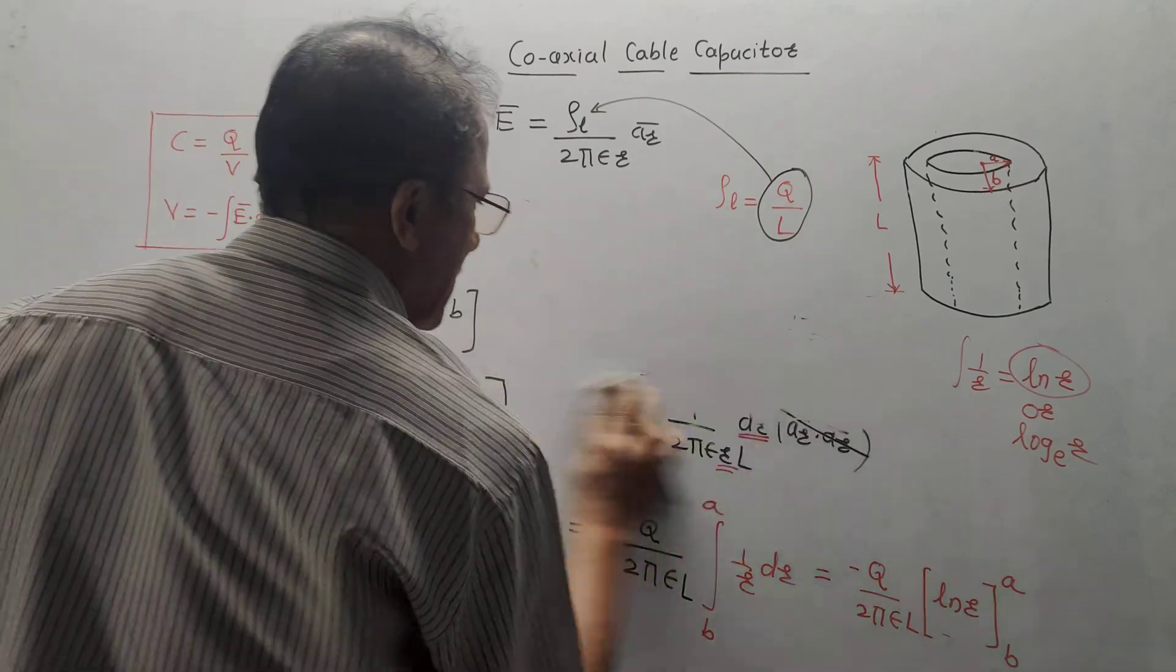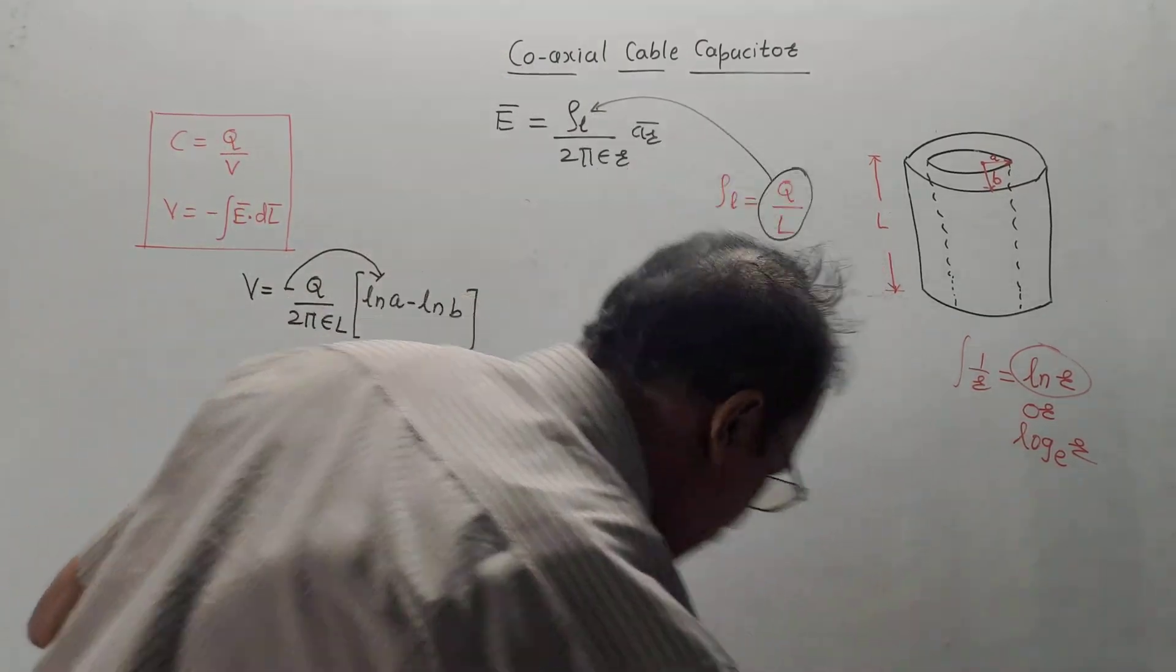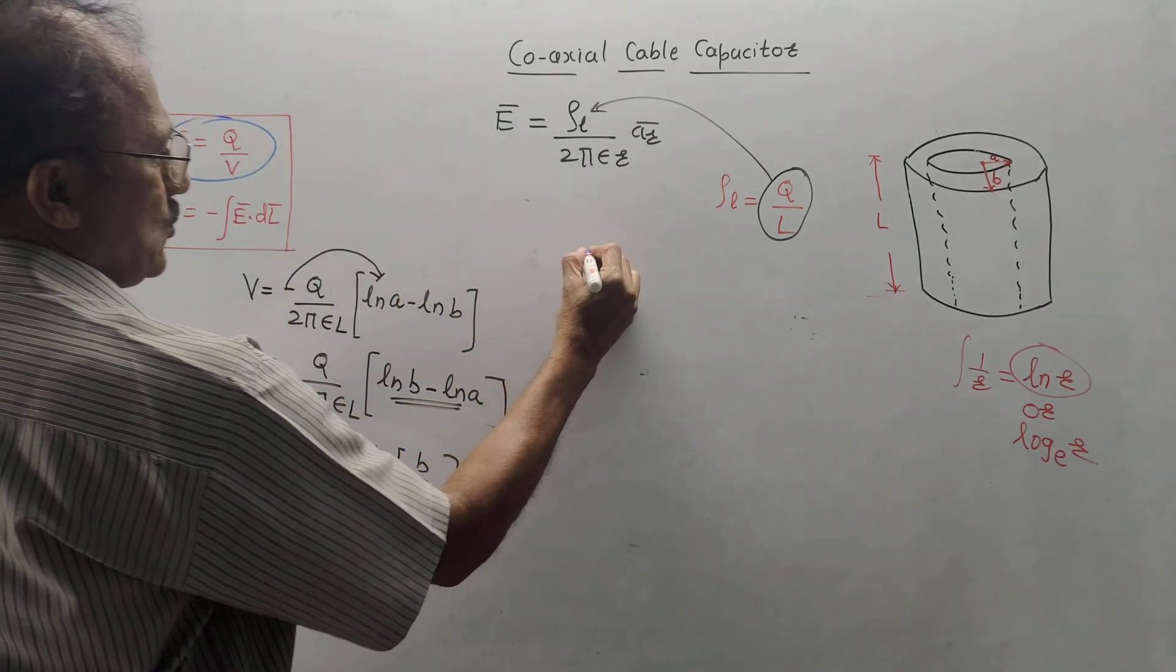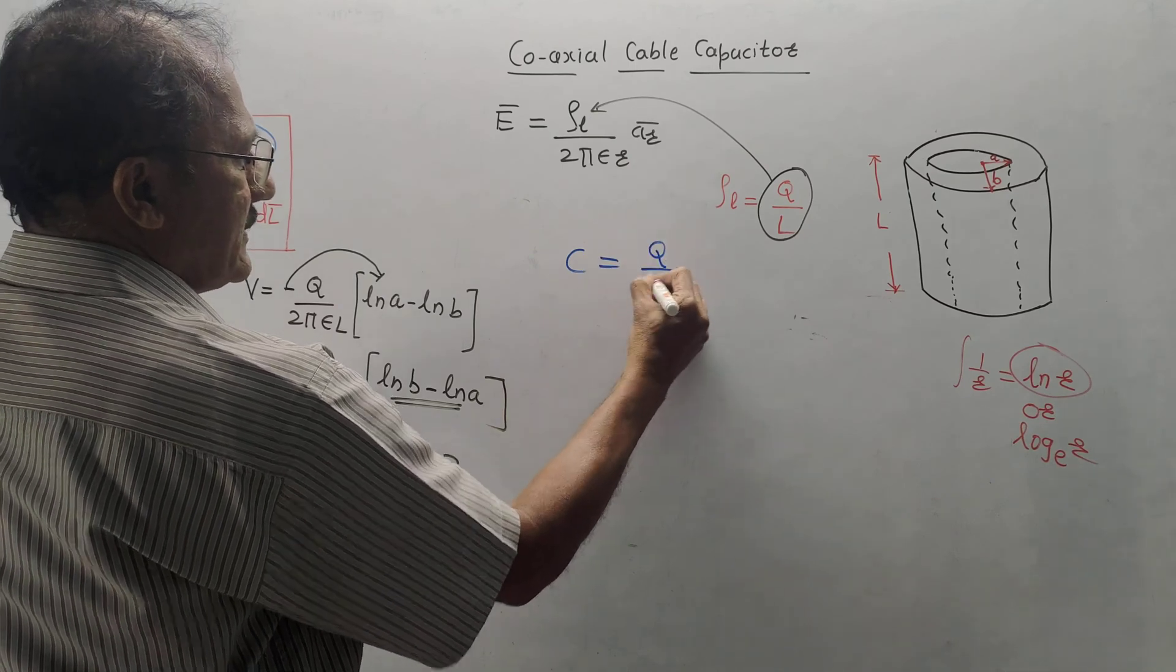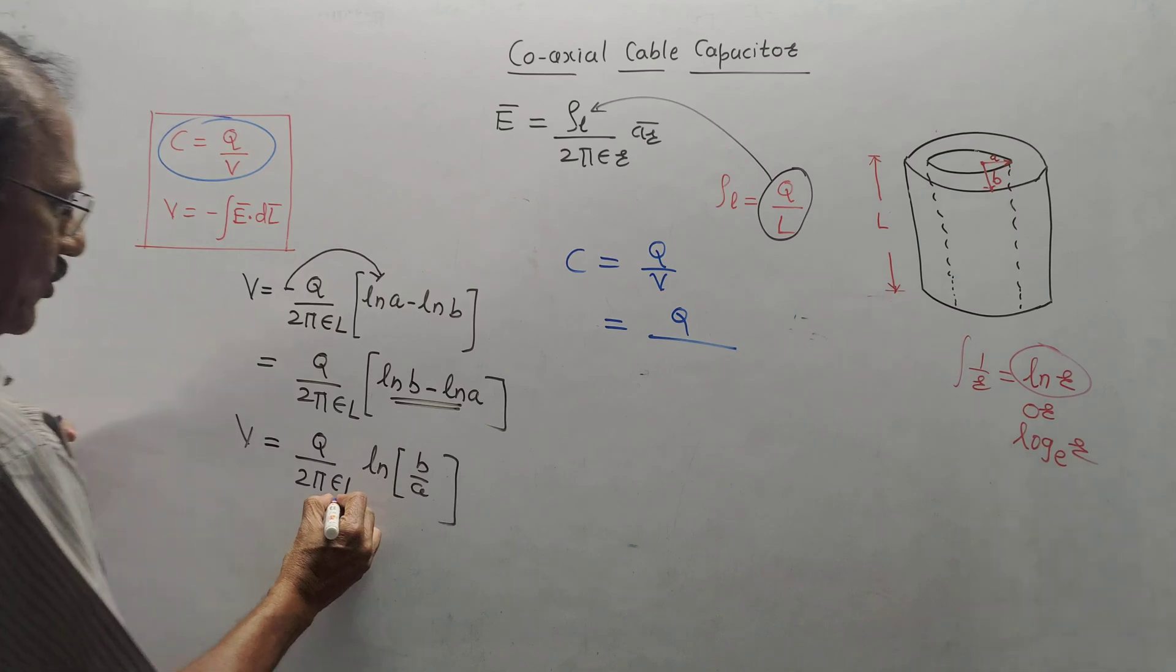Now, at the final stage, we have to make use of basic equation of capacitance, that is basic formula of capacitance, which is C equals Q by V. So, I will write the formula, C equals Q by V. So, it becomes Q upon, put the value of V as it is.